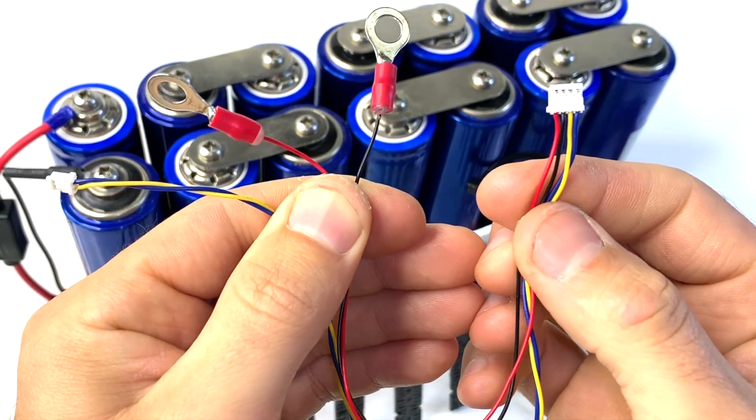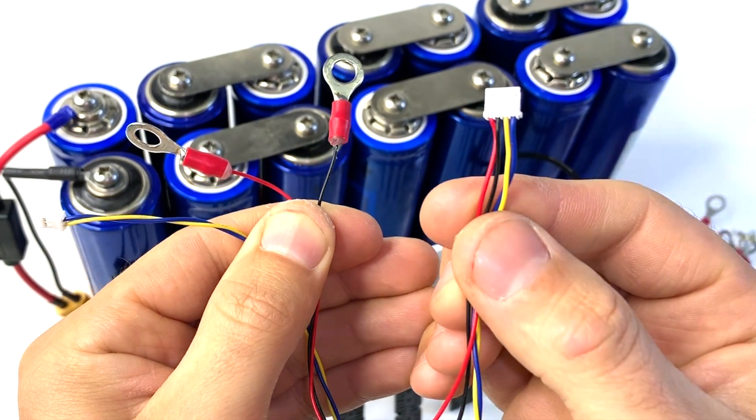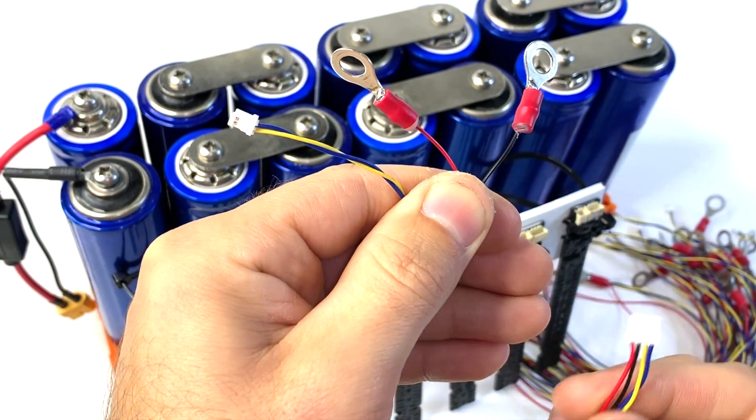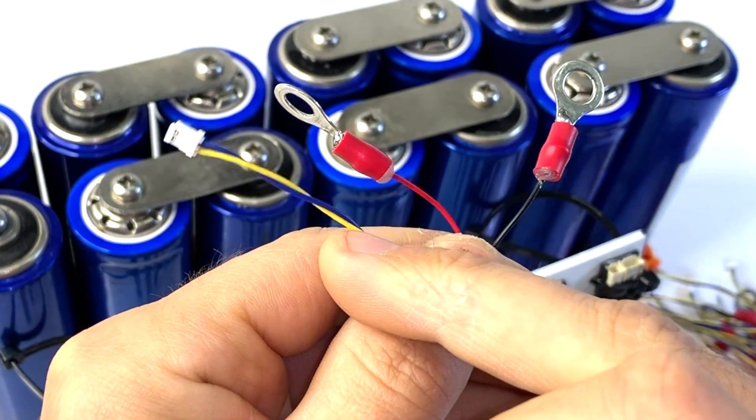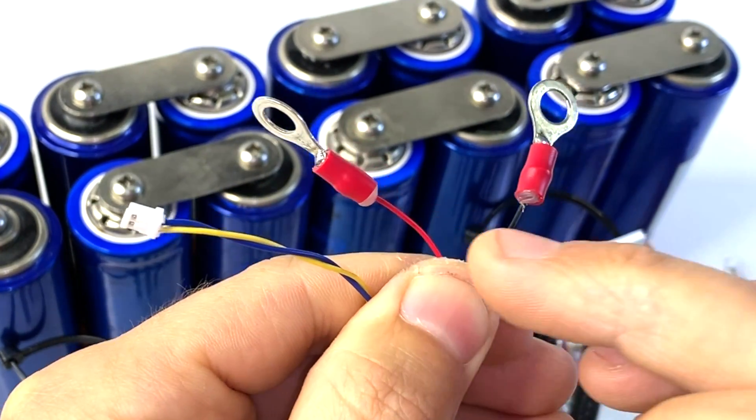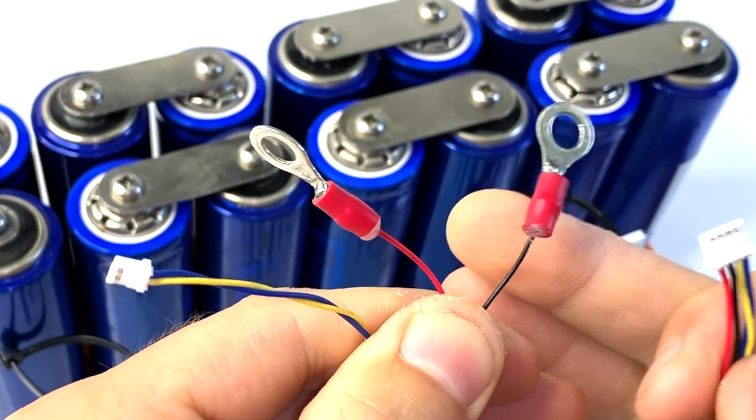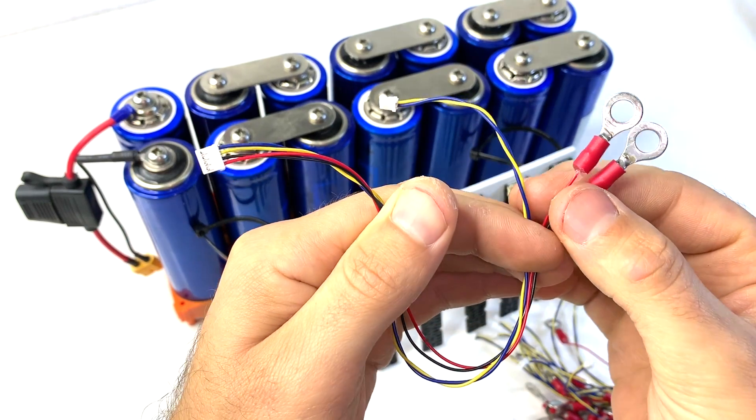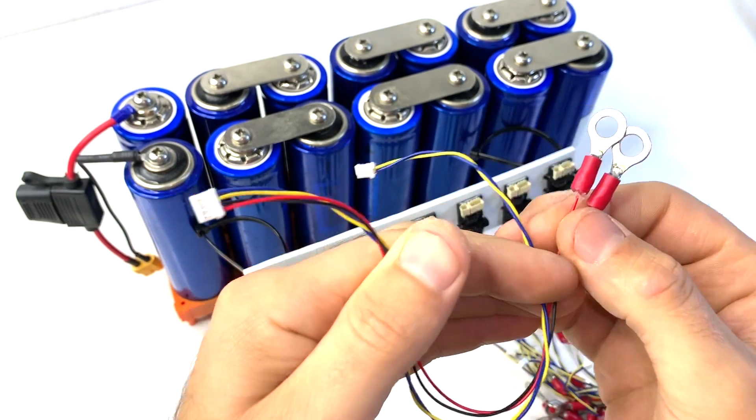So here we have a close up of the cell monitor cables. It's a four pin in one side, and then on the opposite side is actually a communication cable, two pin connection. A red and a black ring connectors. We're actually going to be wiring up all the red and black to every single cell.